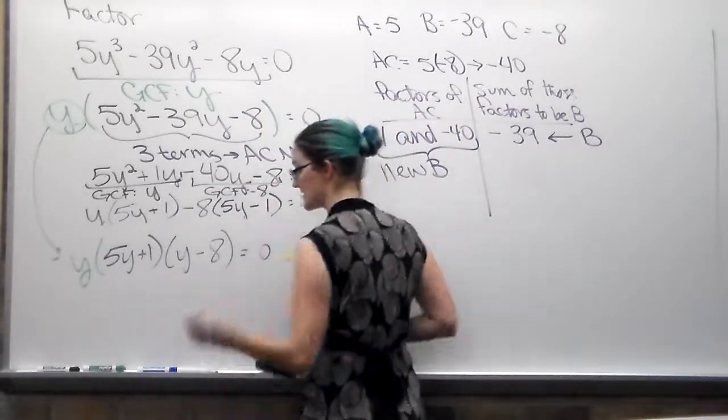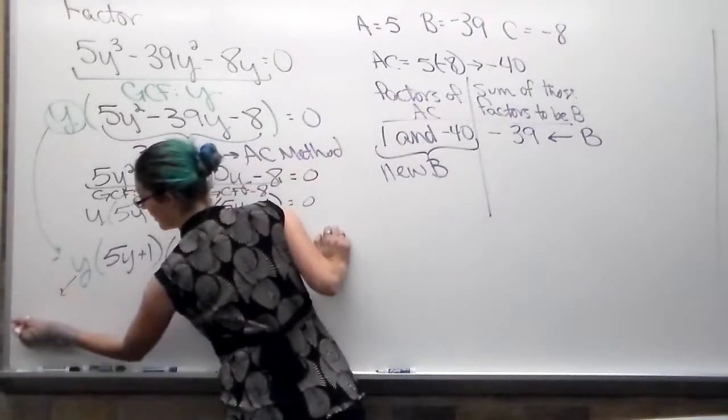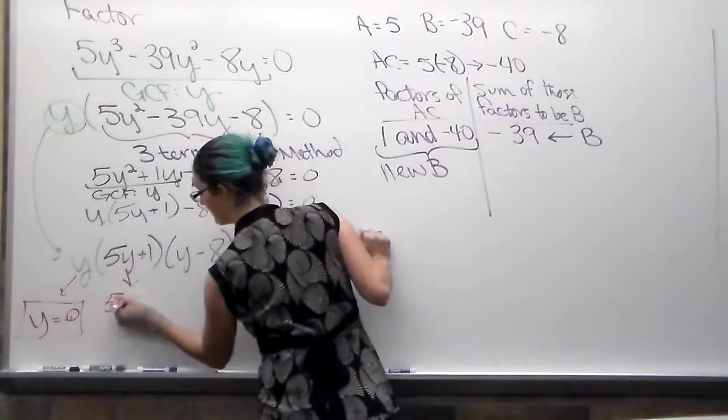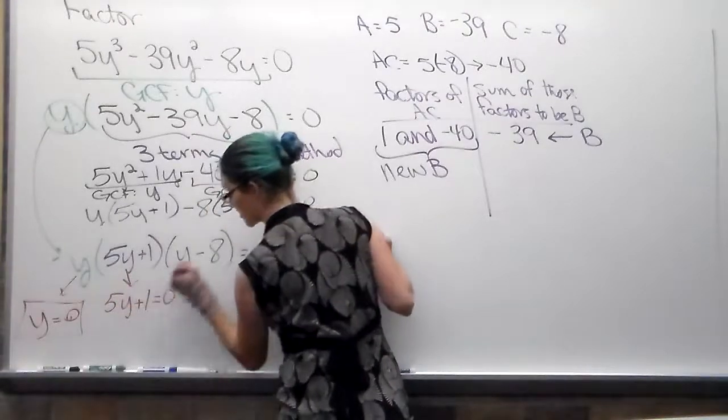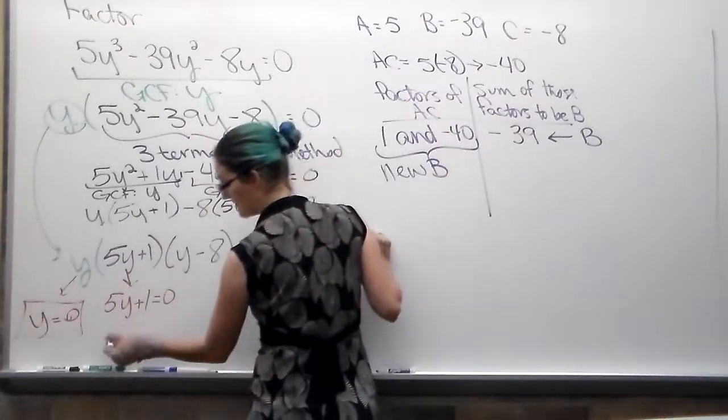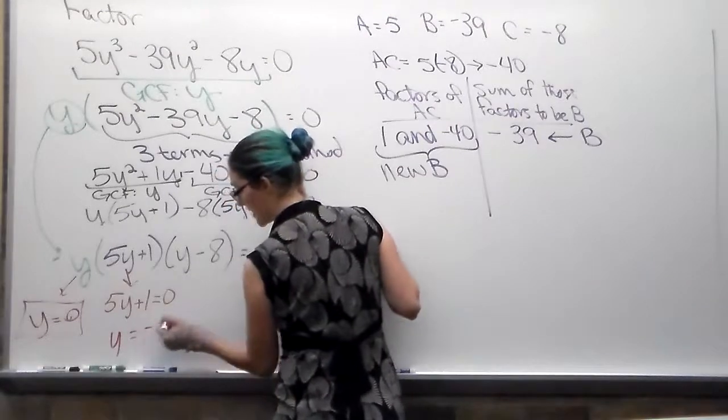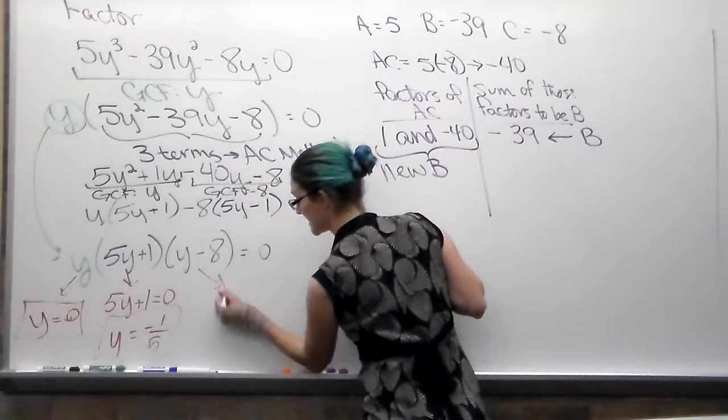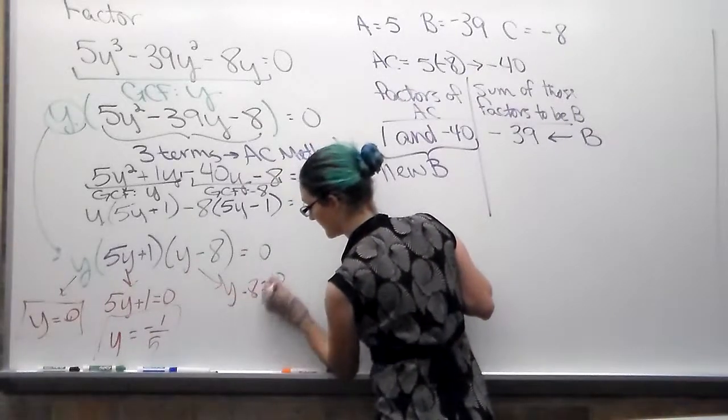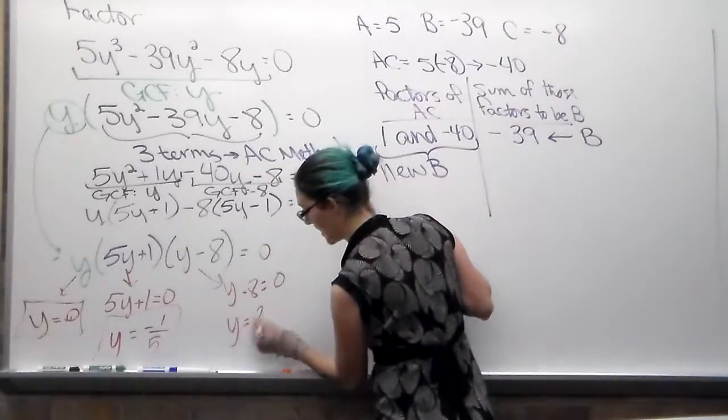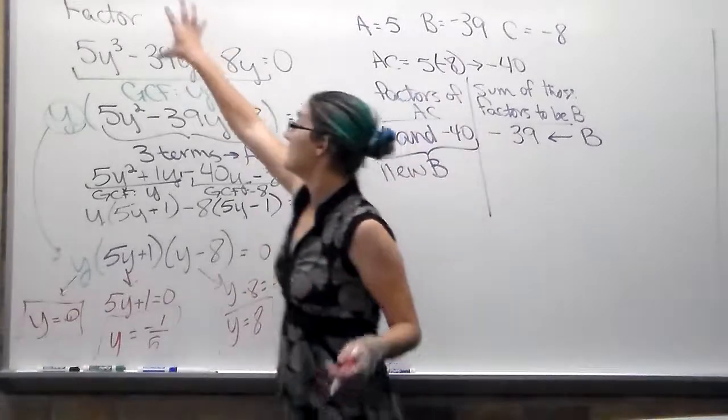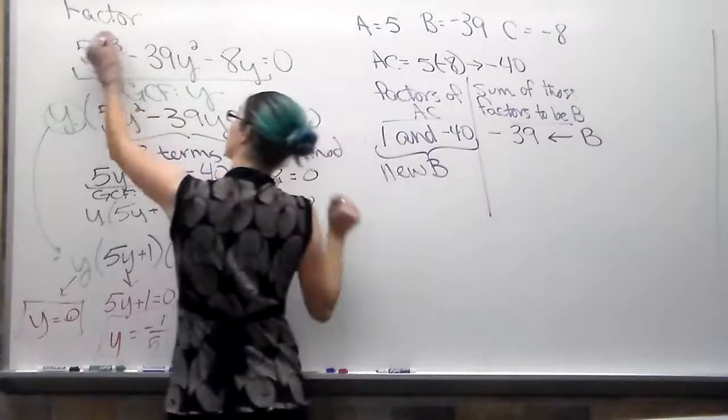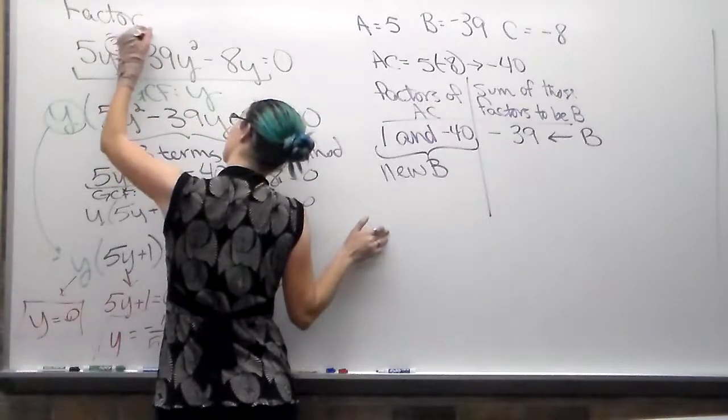So we're going to take each one of these. Y equals 0. That's an answer. 5y plus 1. That's an answer. We're going to subtract 1 and divide by 5. It's going to give us y equals negative 1/5. And y minus 8. Add 8, y equals 8. Keep in mind, very beginning, your highest exponent tells you there's three answers.